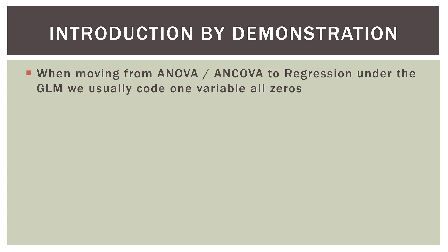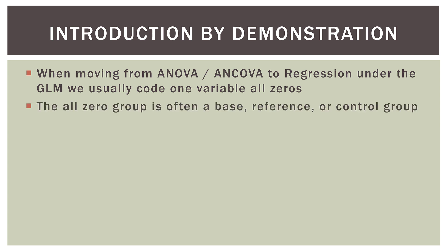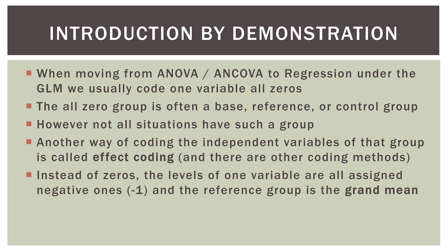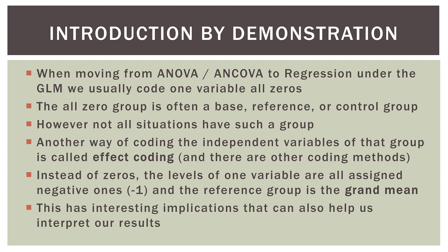A quick overview — I do recommend you go back and watch that first video. When moving from ANOVA or ANCOVA to regression under the GLM, we usually code one variable as all zeros. The all-zero group is often a base, reference, or control group. However, not all situations have such a group. Another way of coding the independent variables is called effect coding. So instead of zeros, the levels of one variable are all assigned negative ones. The reference group is the grand mean instead of one of the other levels. This has interesting implications for interpretation, and I actually like this way a bit better.